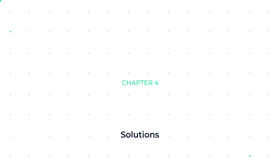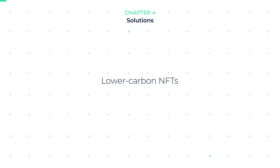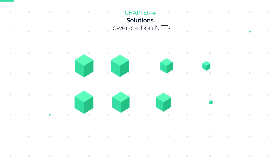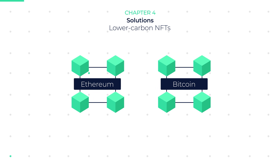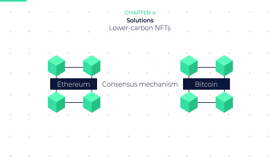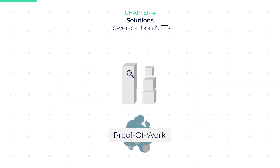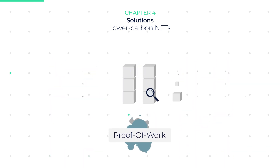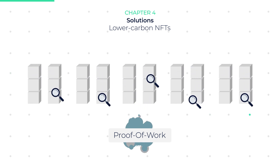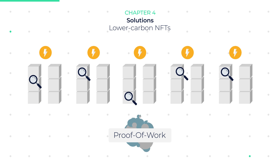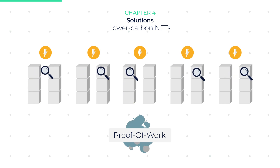Chapter 4: Solutions — Lower Carbon NFTs. The fundamental reason for the high energy consumption of blockchains like Ethereum and Bitcoin is that they use a consensus mechanism called Proof-of-Work. Proof-of-Work is an excellent system to verify data integrity, but as global adoption of blockchains that use proof-of-work technology increases, so does the power consumption by miners to verify the data.